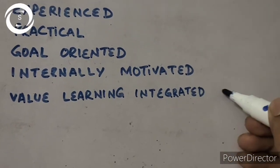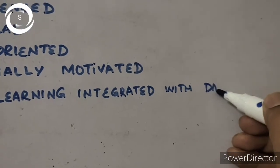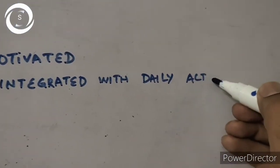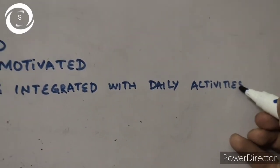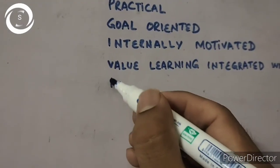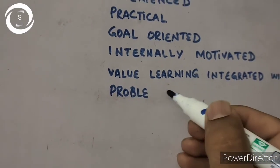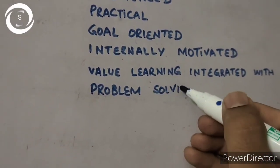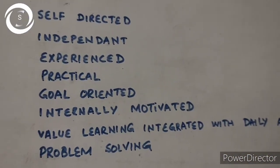So these are the five adult learning principles. In summary, adults are practical, problem-solving, goal-oriented, self-directed, independent, experience-driven, internally motivated, and prefer learning integrated with daily life.